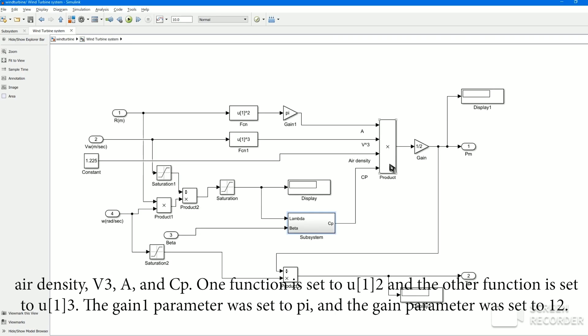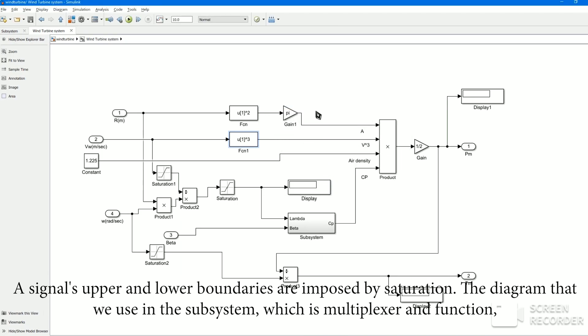Multiplexers are employed for air density, velocity raised to 3, area swept, and performance coefficient. One function is set to U[1]2 and the other function is set to U[1]3. The gain 1 parameter was set to pi, and the gain parameter was set to 1/2. A signal's upper and lower boundaries are imposed by saturation.